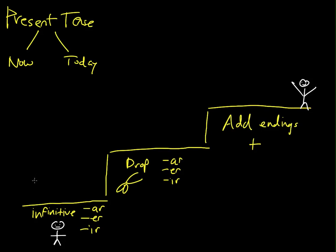So our first infinitive is the verb to speak, which is hablar. So here's a person speaking, kind of. So the second step is I'm going to drop off the AR, so we only have H-A-B-L.